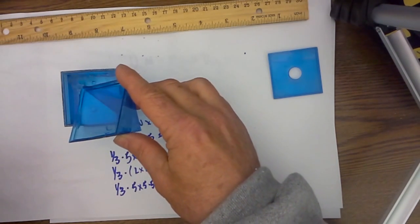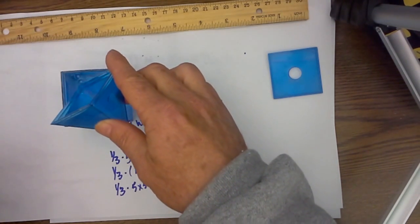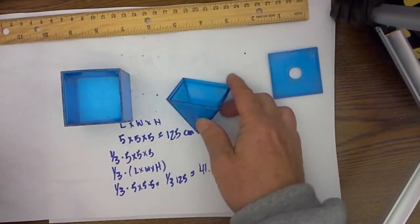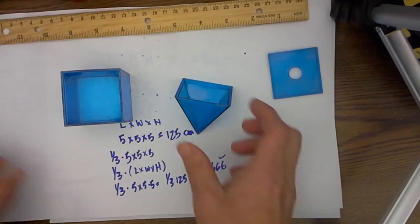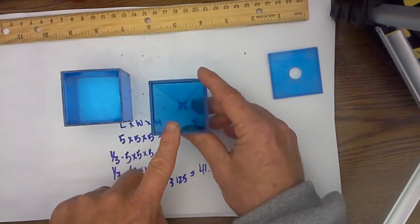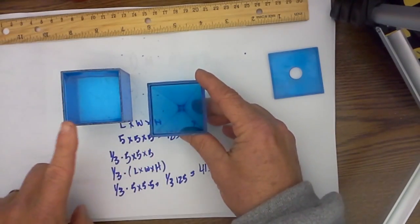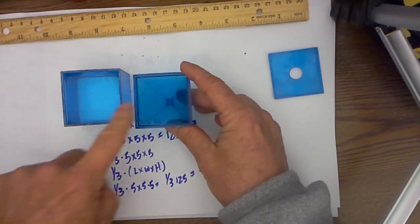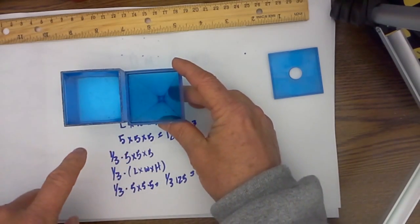And if the formula is correct it should go to the very very top and indeed it does. So once again the formula, it takes three of these to fill up one prism that has the same size base and is the same height.